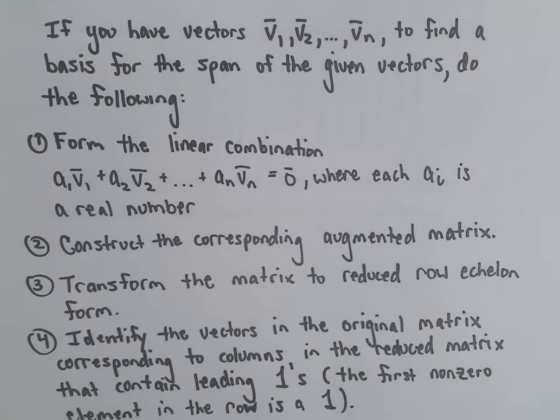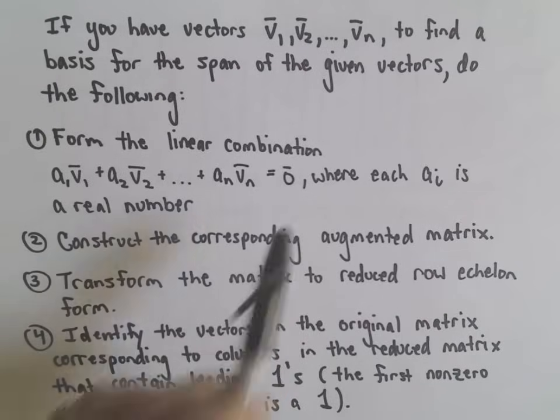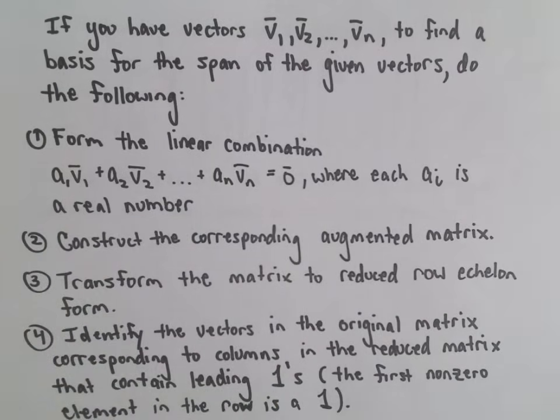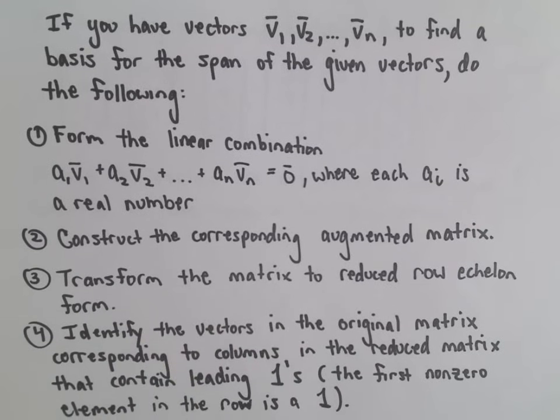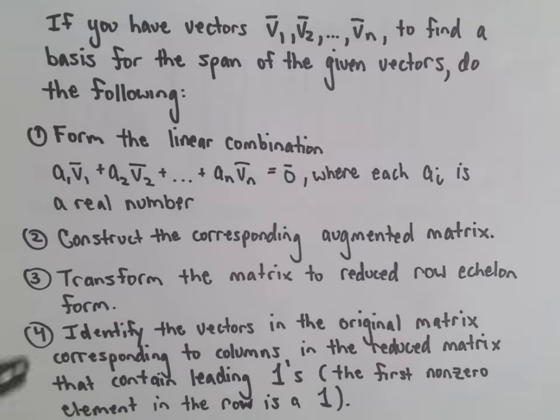We've got some vectors v1, v2, up to v sub n. Form the linear combination a1·v1 + a2·v2 + ... + an·vn = 0, where each ai is a real number. Then construct the corresponding augmented matrix. Transform the matrix to reduced row echelon form. Finally, identify the vectors in the original matrix corresponding to columns in the reduced matrix that contain leading ones - the first nonzero element in the row is a 1. That's all we're going to do.